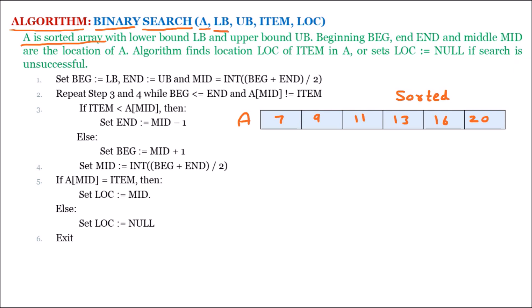The second parameter is LB, which is the lower bound. We are assuming the array starts with index value 1, then 2, 3, 4, 5, and 6 — these are the index positions. The lower bound signifies the first index, which is 1. The next parameter is UB, which signifies the upper bound. Index value 6 is the upper bound of the array.